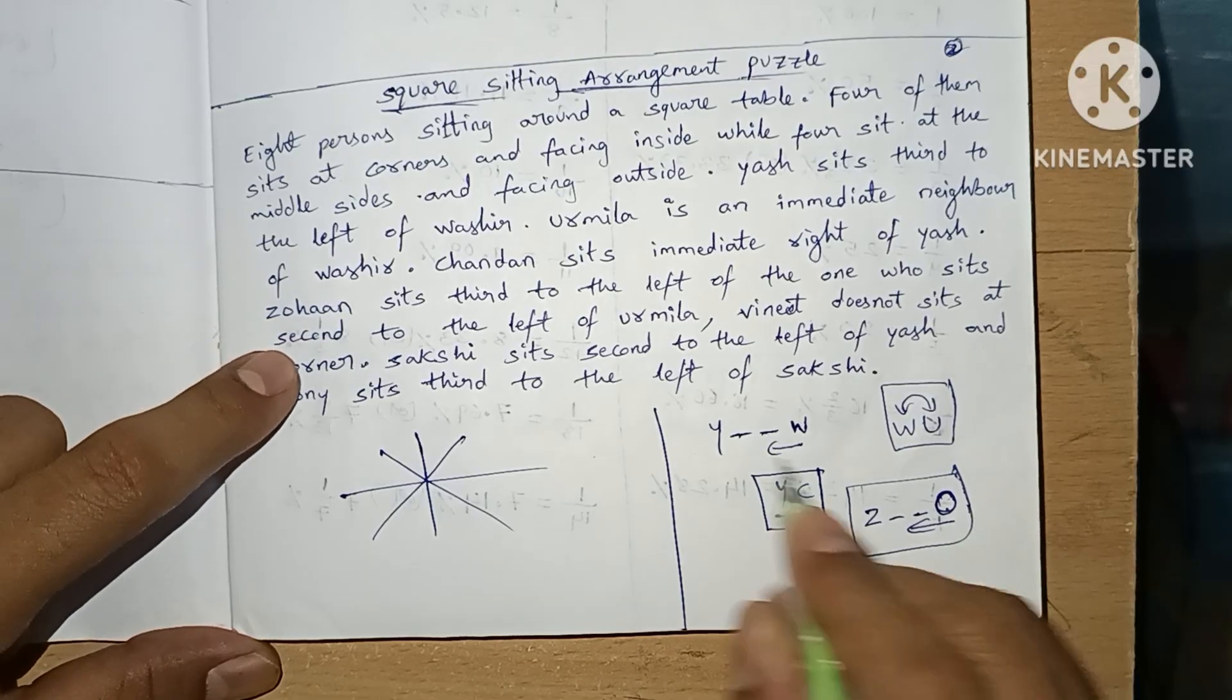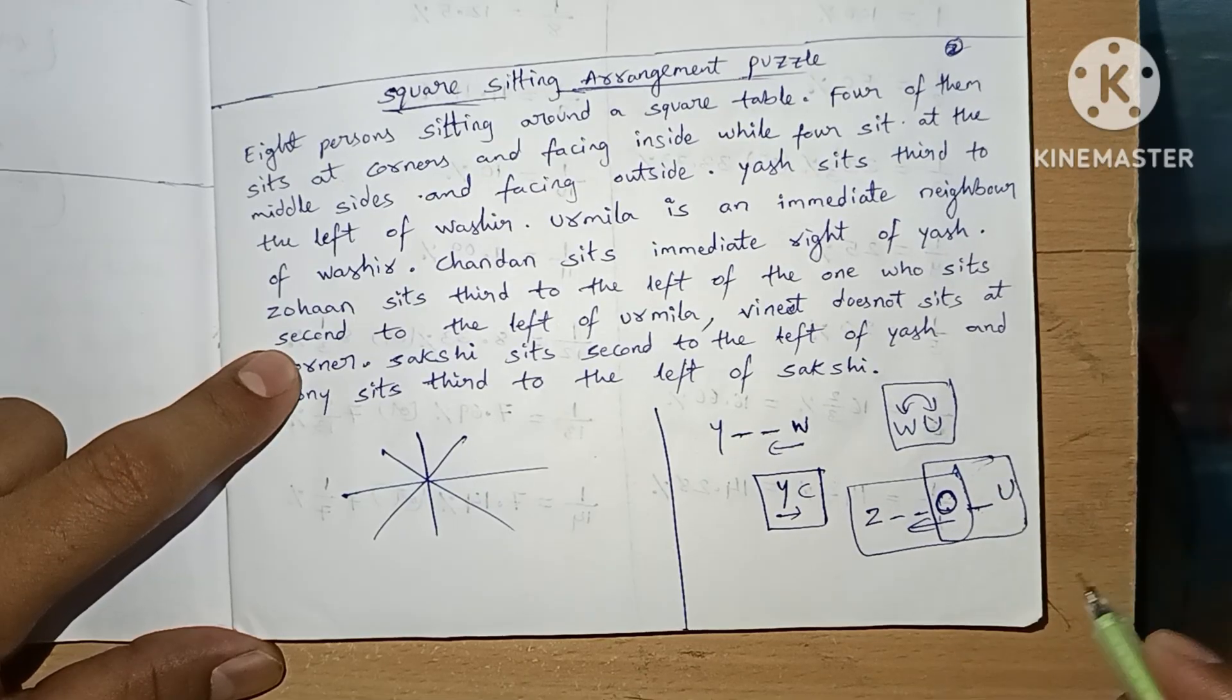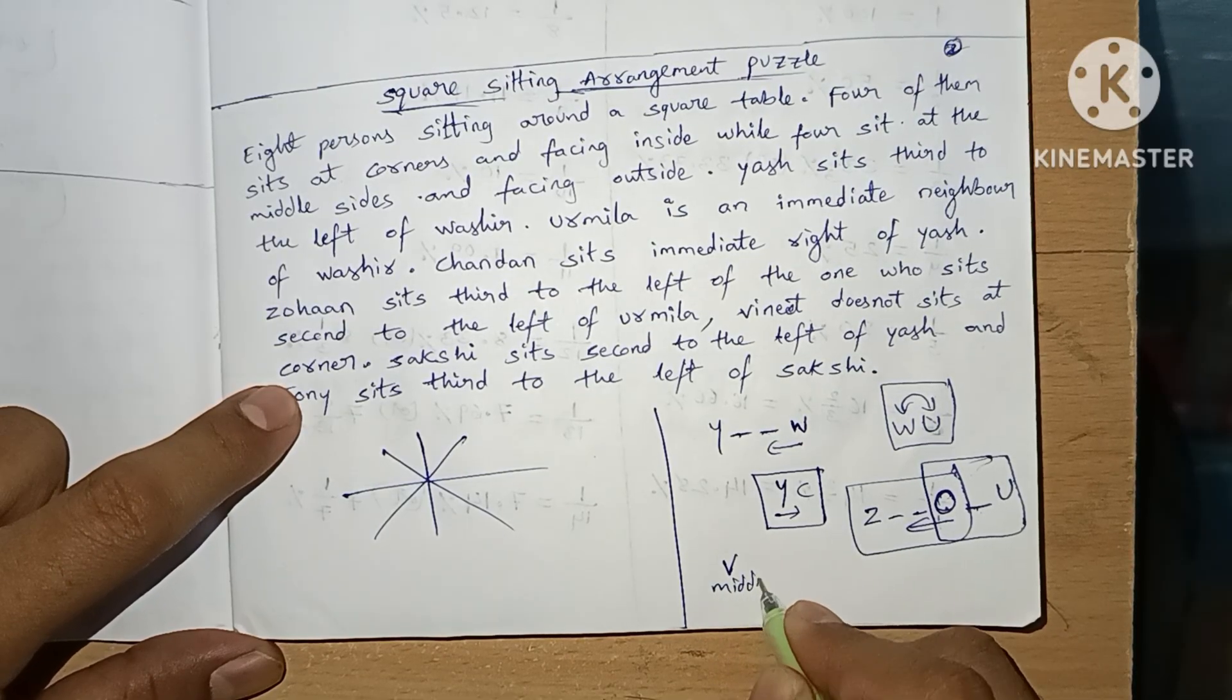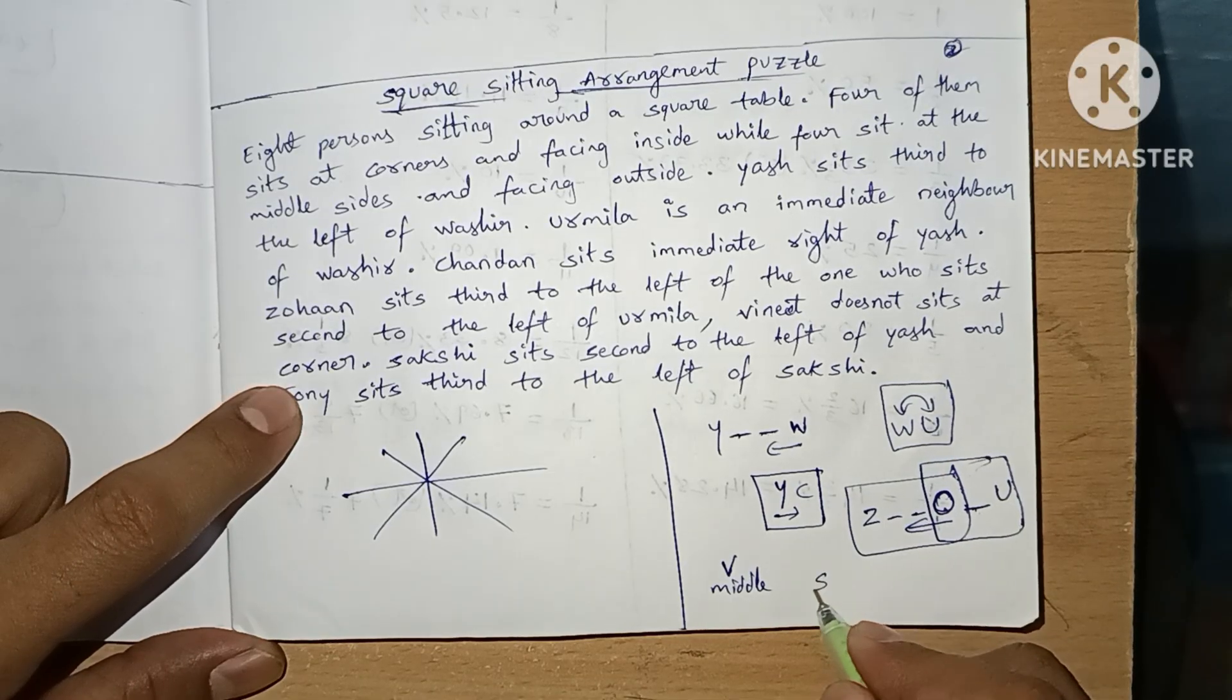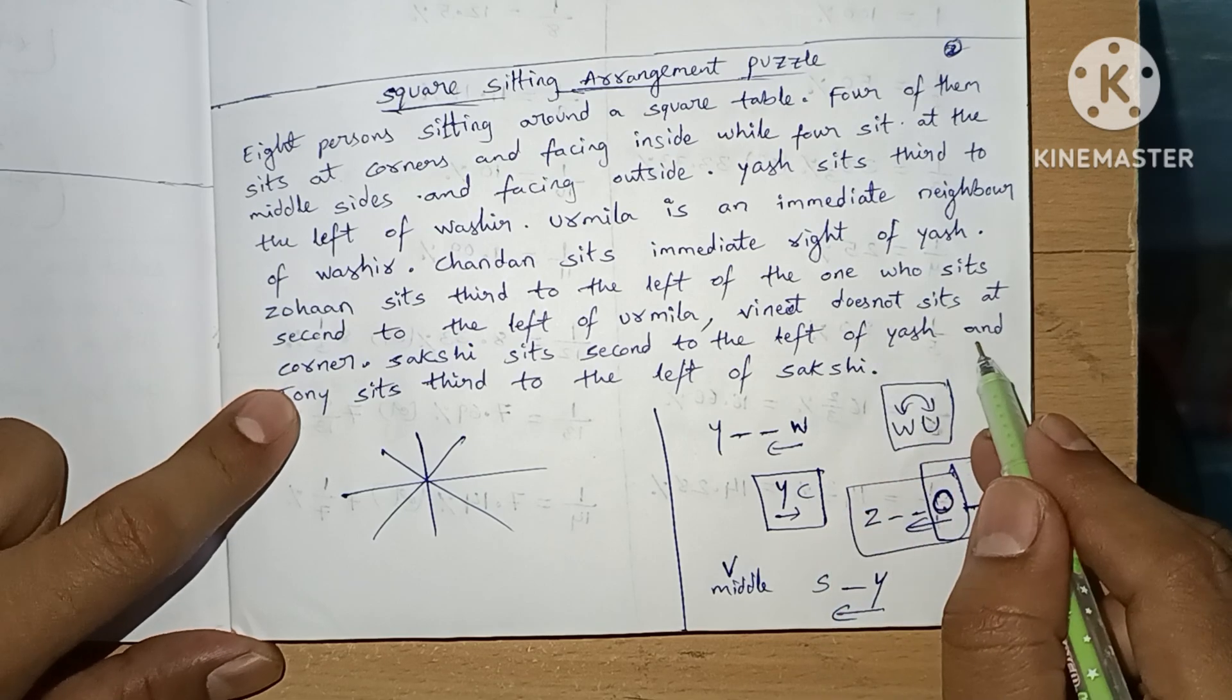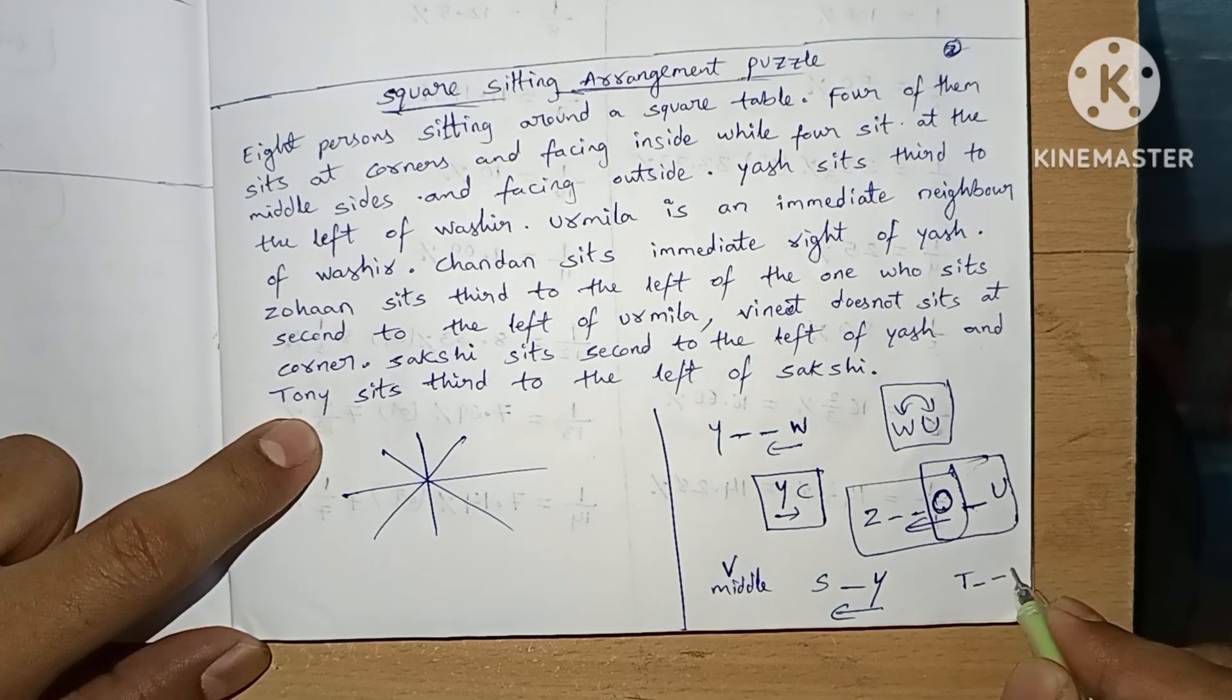Veneet does not sit at the corner, means Veneet sits in the middle. Shakshi sits second to the left of S. And Tony sits third to the left of Shakshi.